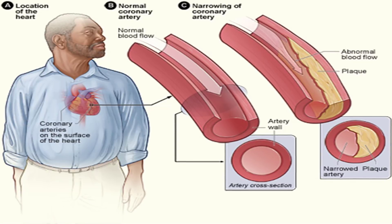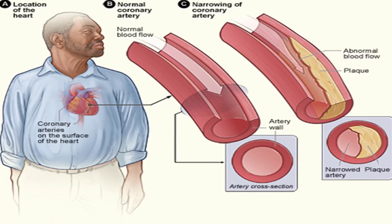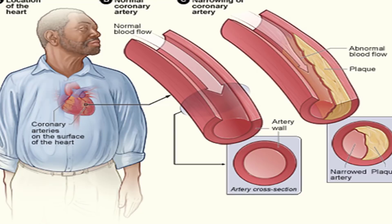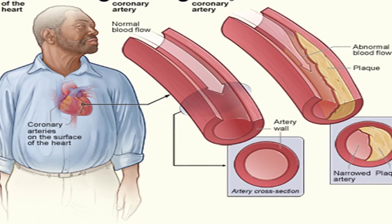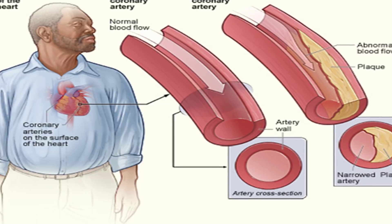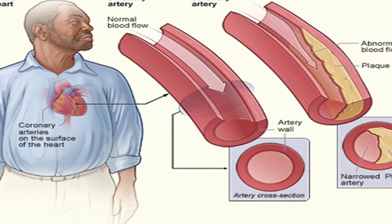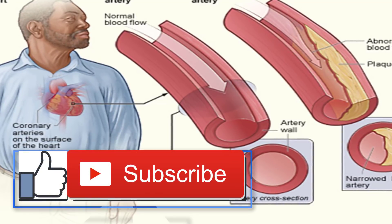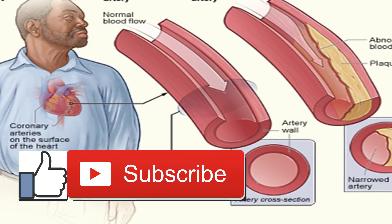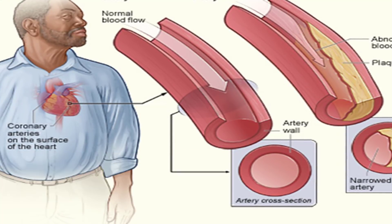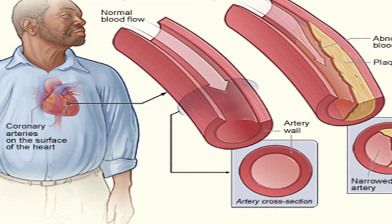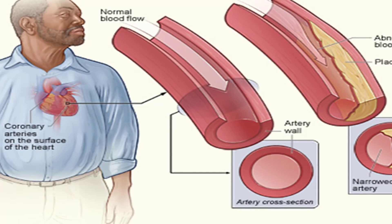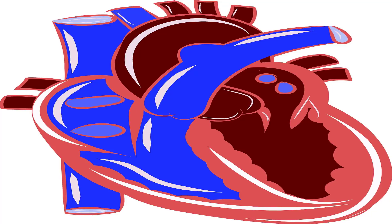Some studies have shown that individuals suffering from depression develop heart disease at higher rates than the general population. Depression can lead to a number of changes in your body that increase your risk for heart disease or a heart attack. Too much stress and consistently feeling sad can elevate your blood pressure and raise your levels of a substance called C-reactive protein, or CRP, which is a marker for inflammation in the body. Higher than normal levels of CRP have also been shown to predict coronary heart disease.